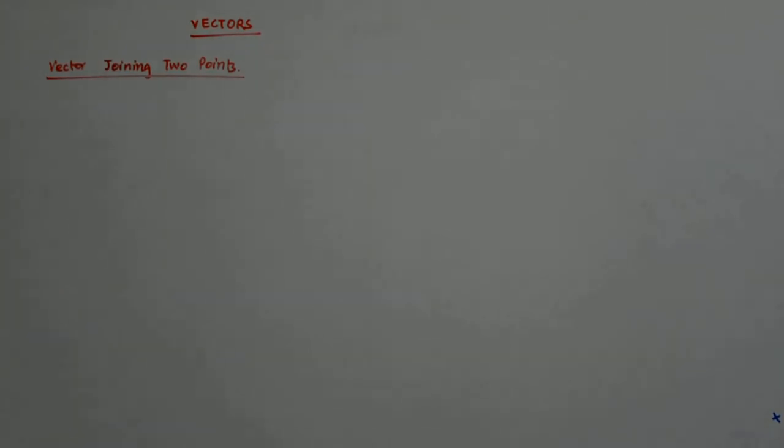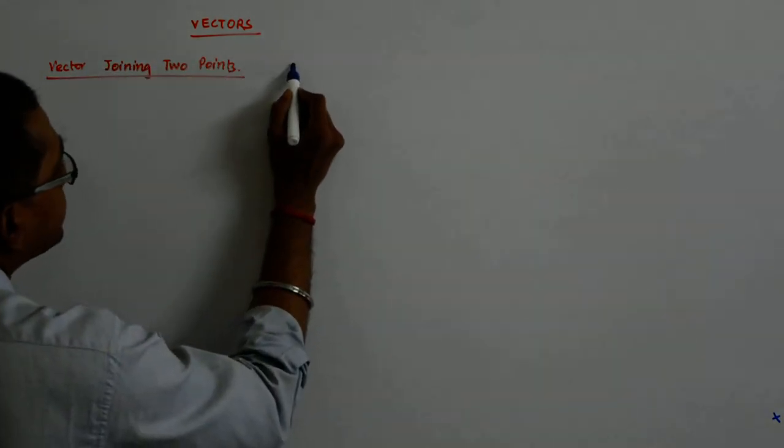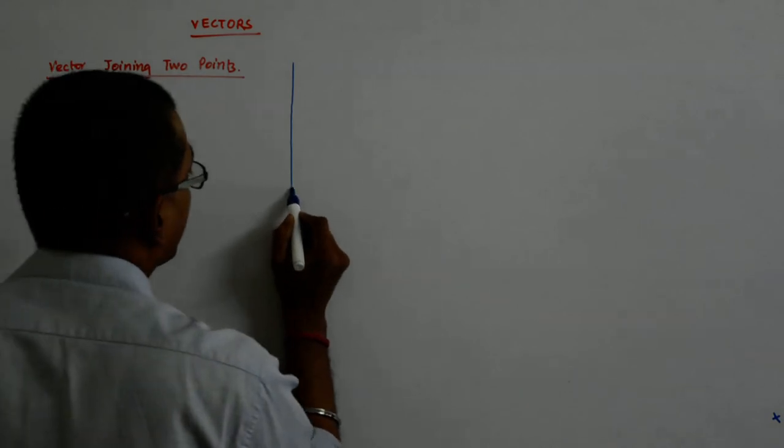Now we come to a vector that joins two points. We have already dealt with the position vectors.